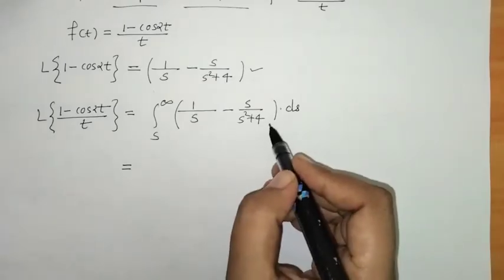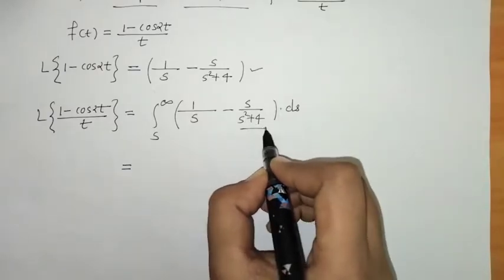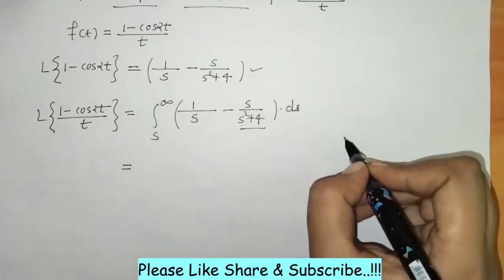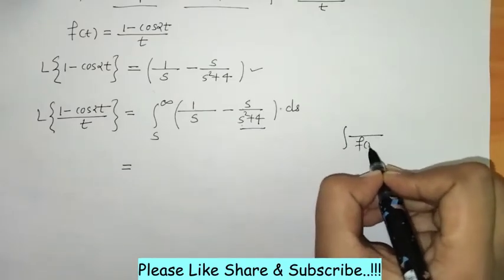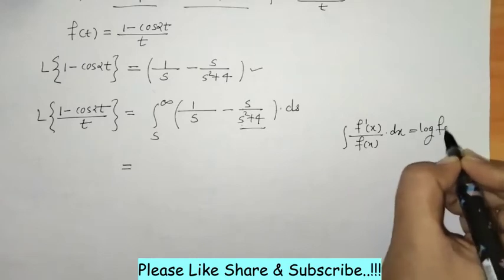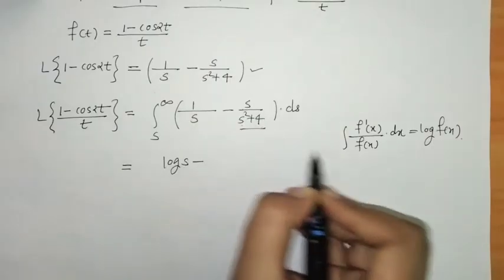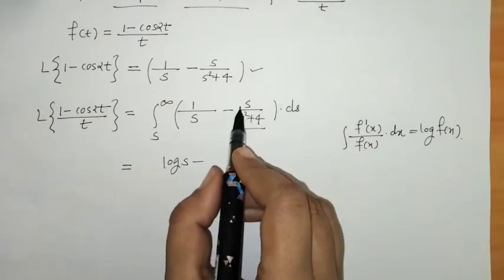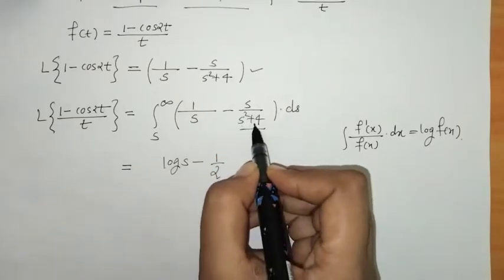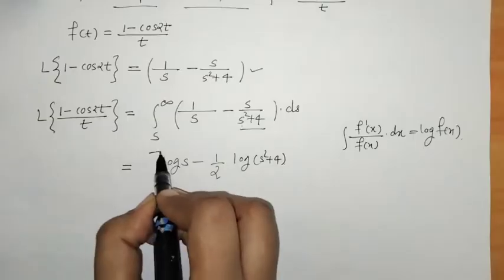We need to find this integral. For the term s/(s² + 4), we notice that the derivative of s² + 4 is 2s, so this is of the form f'(x)/f(x), giving log(f(x)). We adjust by a factor of 1/2, so the integral gives (1/2)log(s² + 4). The integral of 1/s gives log(s). This is evaluated within the limit s to infinity.